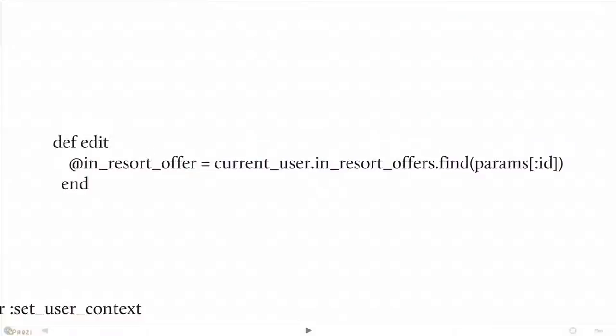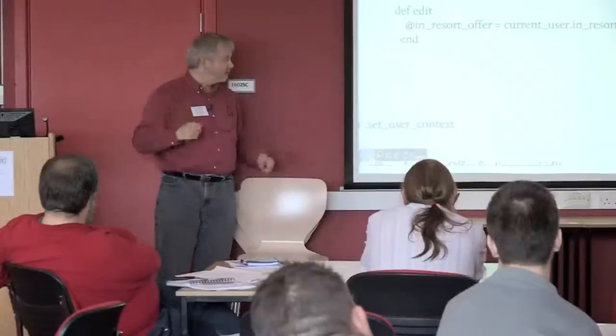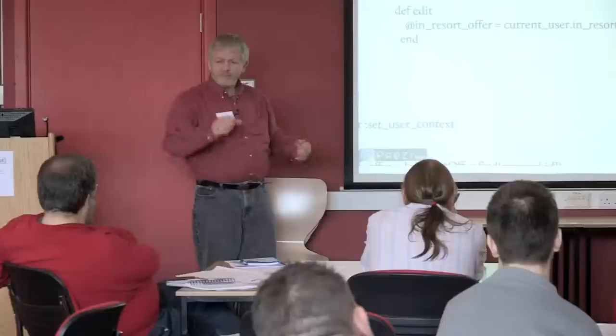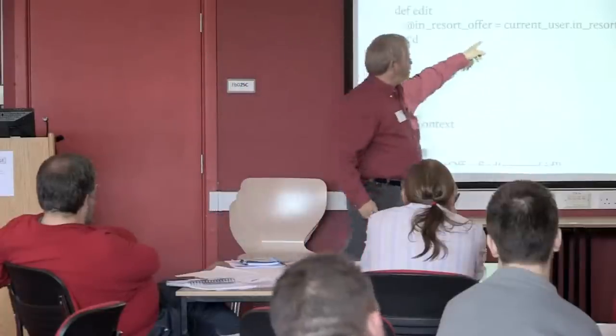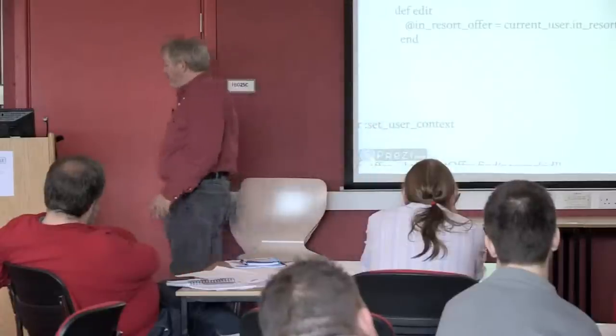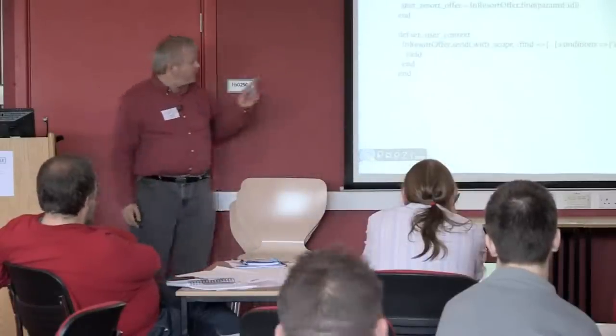So the quick fix, because the user has to be logged in to see these offers, is to just whack in current_user dot. And that's great, but you've got index, create, retrieve, update, delete—five methods—so you have to do that in five methods. And also, does anyone know what Demeter is about, the Law of Demeter, where you don't have train wrecks? You've got this horrible train wreck now with all these dots and nasty dependencies.